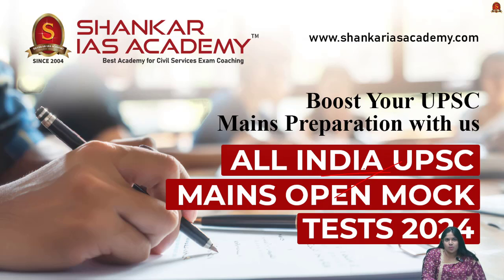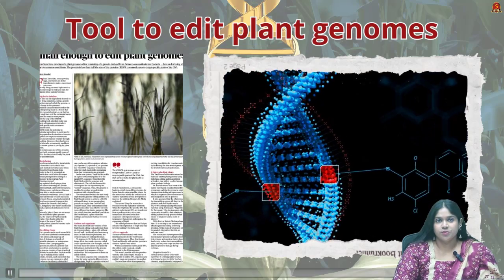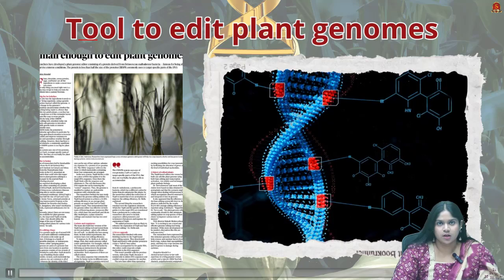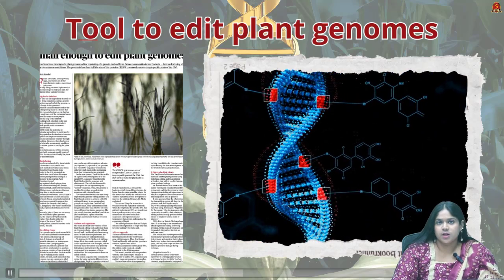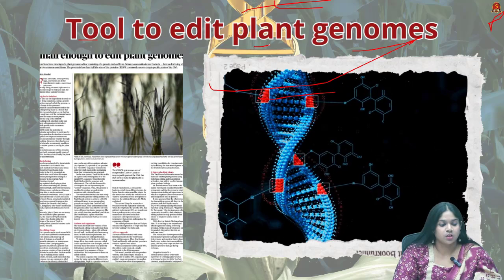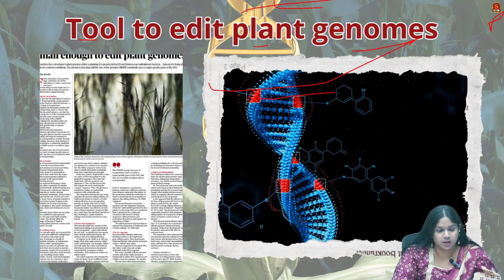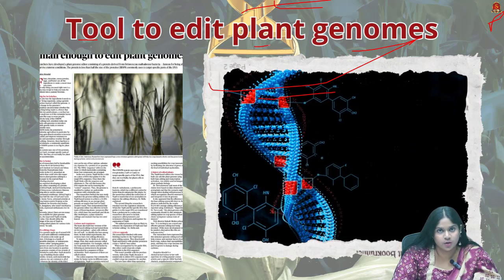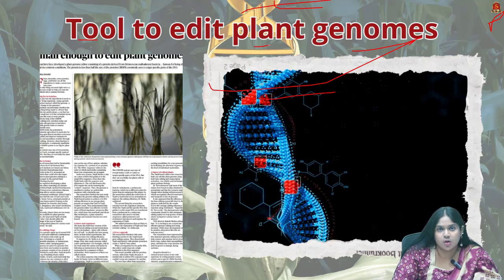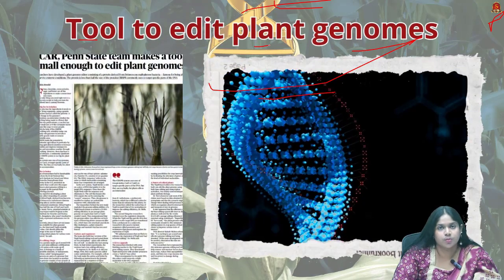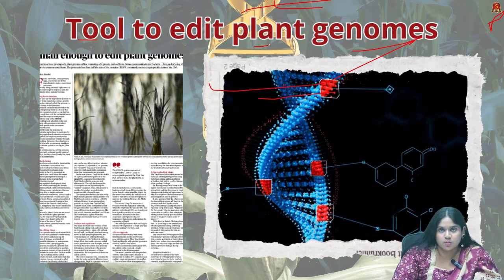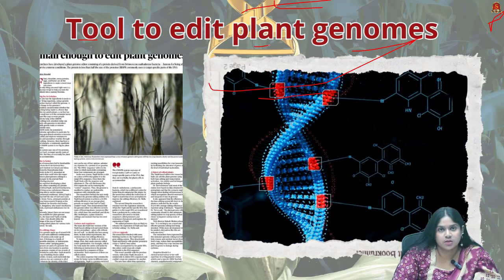Now let's get into the articles discussion. In collaboration with the ICAR National Rice Research Institute and the Pennsylvania State University, they have developed a plant genome editor using a protein derived from the bacteria Deinococcus radiodurans. This new editor, named TnpB, is less than half the size of the commonly used CRISPR proteins Cas9 and Cas12, making it small enough to target specific parts of the DNA more effectively.